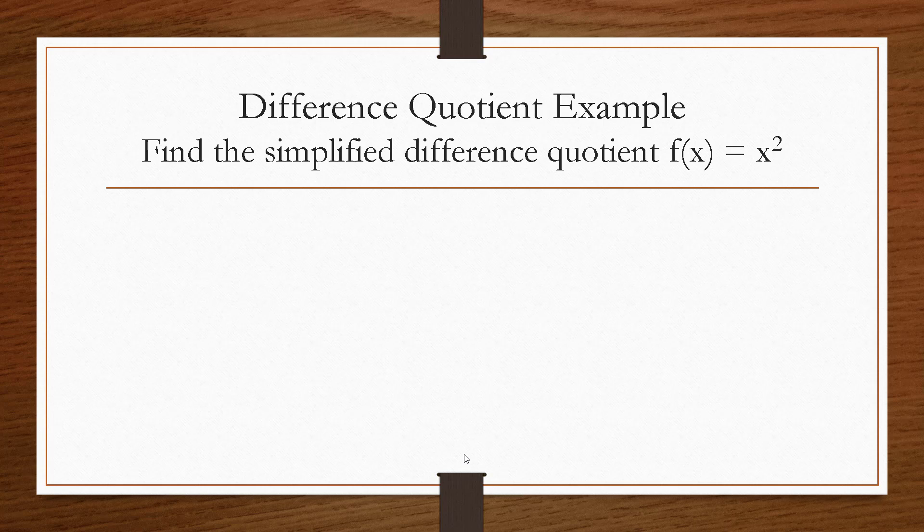All right, so let's view an example. Suppose we want to find the difference quotient, the simplified difference quotient, for a function that's equal to x squared. So recall that our difference quotient is f of x plus h minus f of x over h. When we write our simplified difference quotient, we're going to want to leave the x's and h's in the formula, but we don't want to leave the f of x in the formula. So let's figure it out.